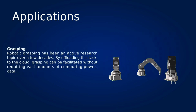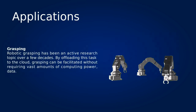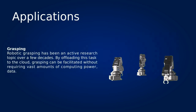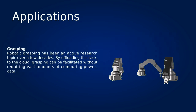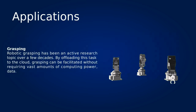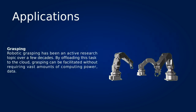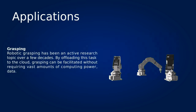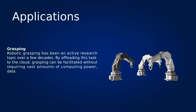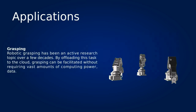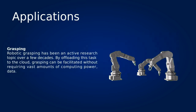Robotic grasping has been an active research topic over a few decades. If the full 3D model of the object is precisely known, various methods can be applied to synthesize the grasp. If the object is unknown or not precisely known, the problem is much more challenging and involves access and pre-processing of vast amounts of data, which can be computationally intensive. By offloading this task to the cloud, grasping can be facilitated without requiring vast amounts of computing power, data, and storage space on the robotic platform.